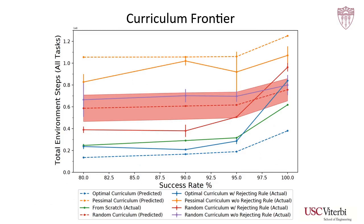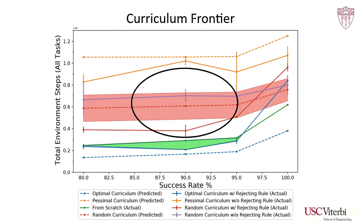This plot shows the number of samples required to reach a given level of performance for various types of curriculum trees. At the bottom, a dashed blue line shows the total edge cost of optimal curriculum trees. Above that line, in solid green, is the number of time steps required for training from scratch. In the 90-95% success rate range, the actual time required to run an optimal curriculum tree dips below the from-scratch time, at most representing an opportunity to improve sample efficiency by roughly 30%. However, the rest of this plot also shows how critical it is to use a well-chosen curriculum tree, as average curriculum trees require significantly more time to train compared to training from scratch.